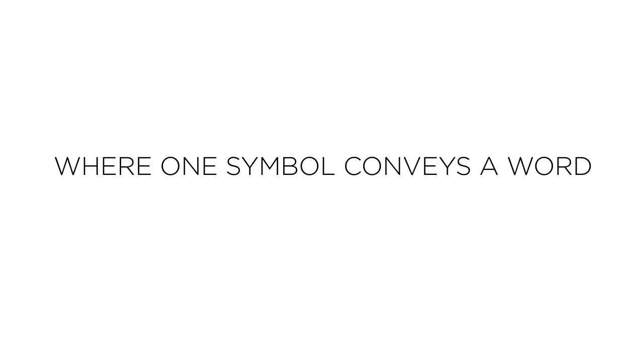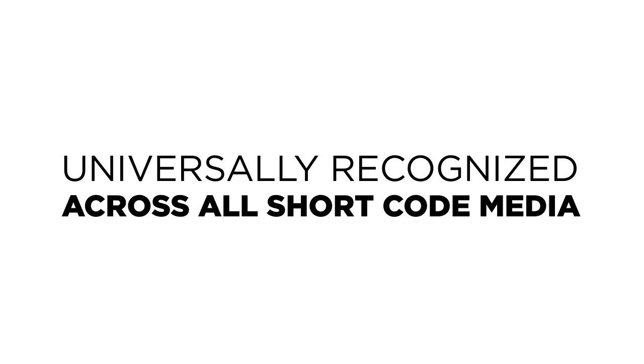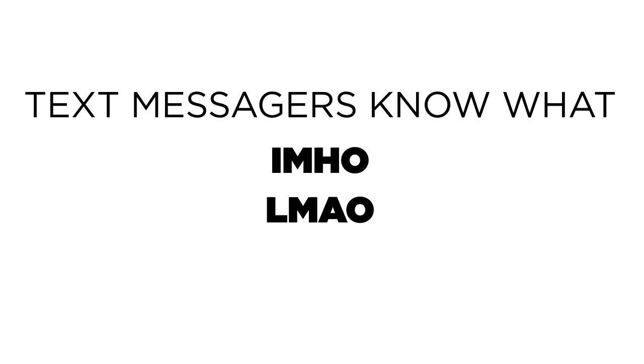Where one symbol conveys a word, use it. The ampersand, the letters UR for the words 'you are,' and the letter W for the word 'with,' are universally recognized across all shortcode media. Text messengers know what IMHO and LMAO mean. Tweeters will, too.